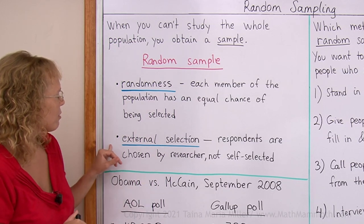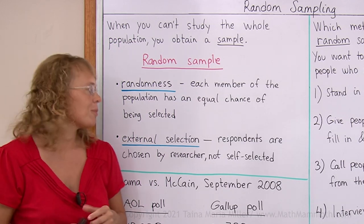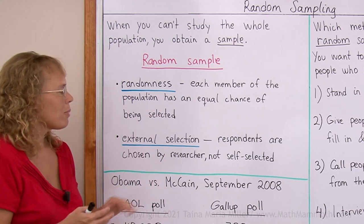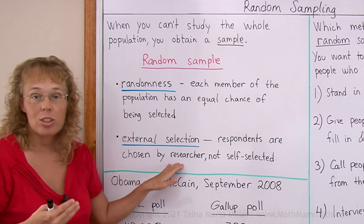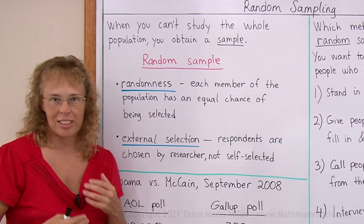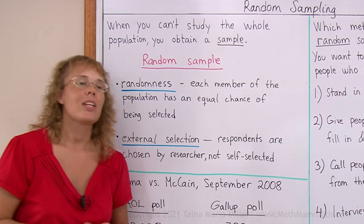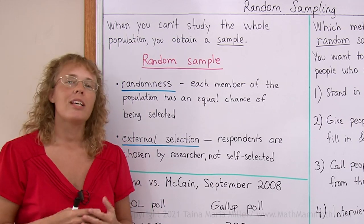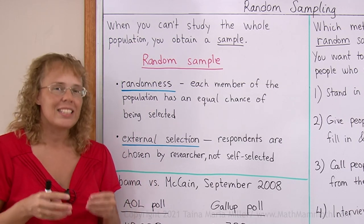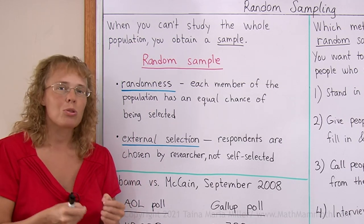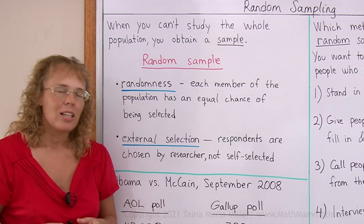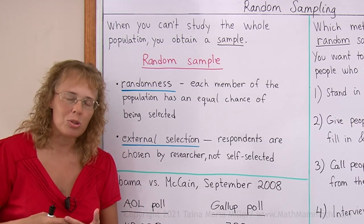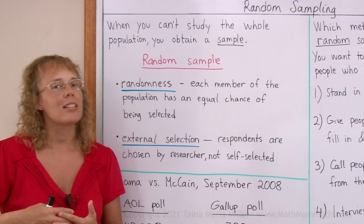The other important feature is external selection. The respondents are chosen by the researcher — by you — and not self-selected. For example, in polls this works this way: whoever is doing the poll selects those who become part of the sample. The people themselves shouldn't be able to choose if they take part or not.